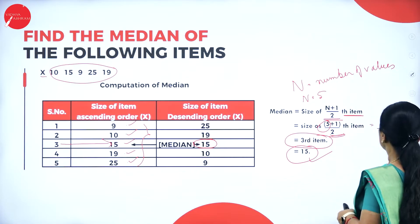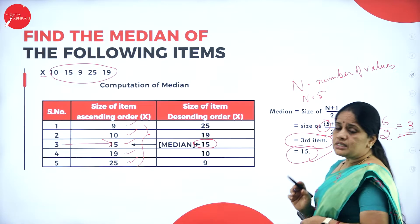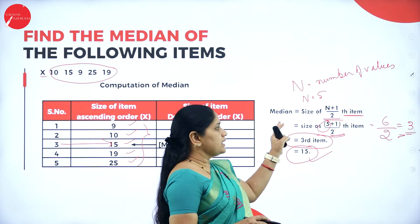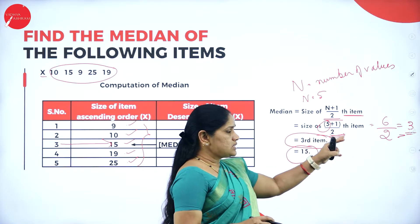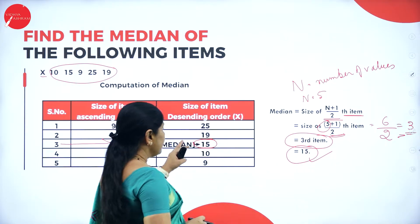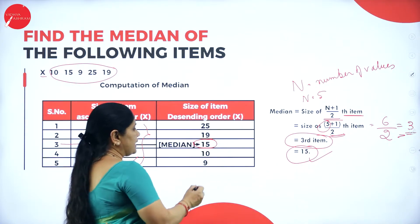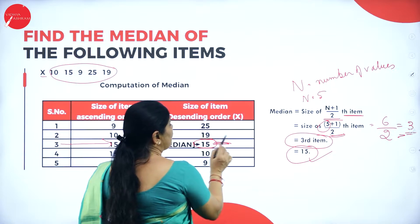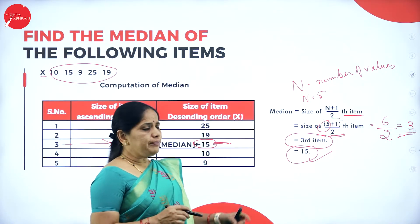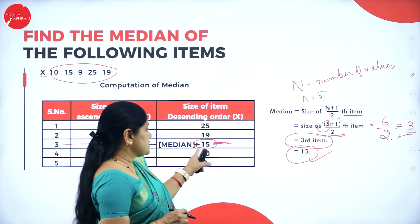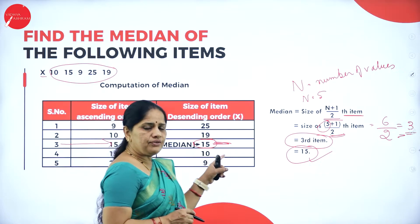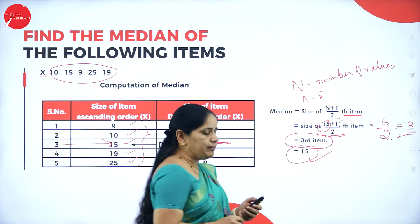Note that 3 is not the answer — 3 shows only the position of the value. We should write the answer as the value itself, not the position. So the median stands in the third position and we write 15 as the median.